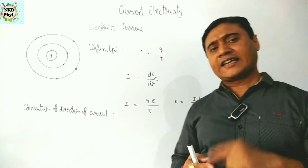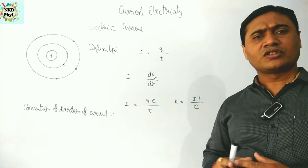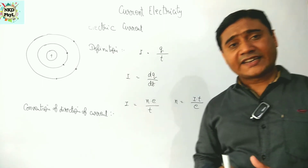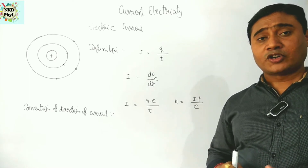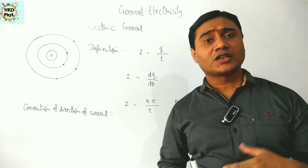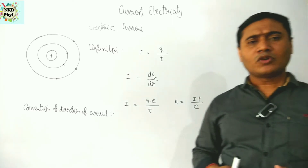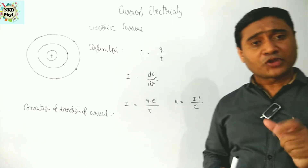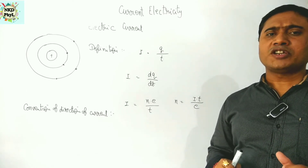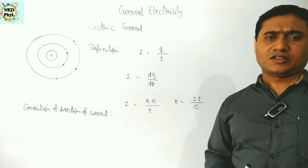In case of gases, normally at normal conditions — normal temperature, normal electric field — gases do not have any charge. But when very intense electromagnetic radiation like X-rays is passed through that gaseous medium, or a very large potential difference is applied along that medium, then the gaseous medium ionizes and hence charges are created.